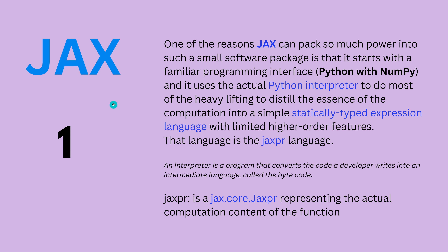This is our third framework if you want, and it uses the actual Python interpreter to do most of the heavy lifting — to distill the essence of the computation into a simple expression language with some limited higher-order features. This expression language is called the JAX expression language. An interpreter is a program that converts the code a developer writes into an intermediate language. In Python we call it the bytecode.